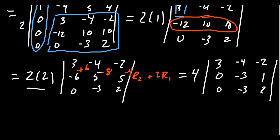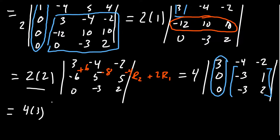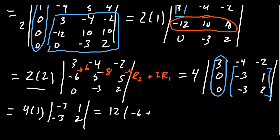Cofactor expanding across the first column, we only have to look at this minor now. So we get 4 times 3 times the 2×2 minor [−3, 1 / −3, 2]. As it's a 2×2, we just calculate the diagonal products: 4 times 3 is 12; we get (−3)(2) = −6, minus (−3)(1) which is −6 − (−3) = −6 + 3 = −3. So 12 times −3 gives us a determinant of −36.